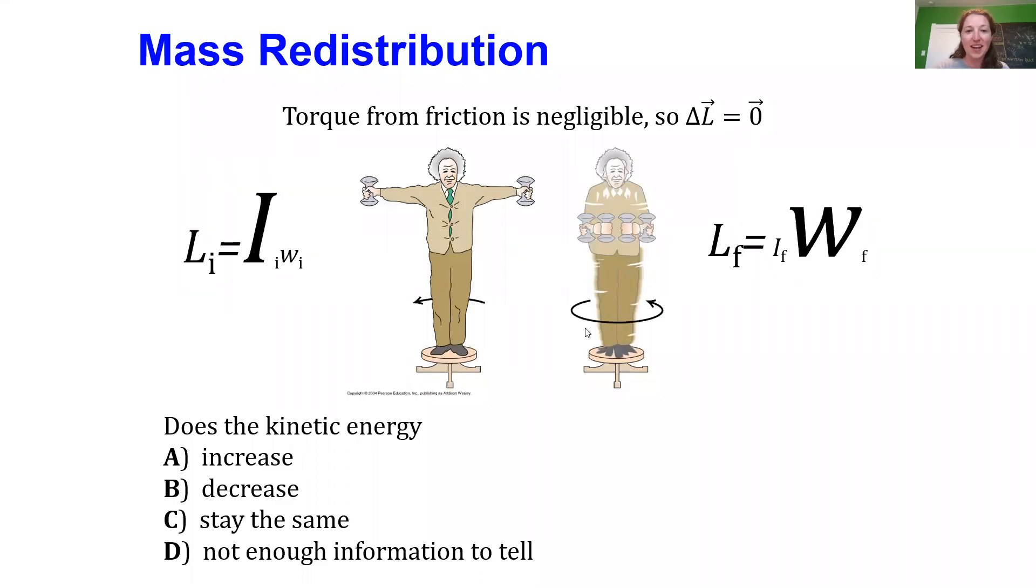So what happens to the kinetic energy of Einstein as he pulls his arms in, or really we're going to define our system to be the person and the weights and the platform, and they're all spinning together. And ask, does the kinetic energy increase, decrease, or stay the same?